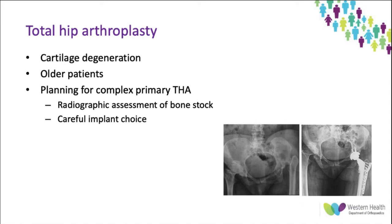In patients where significant cartilage degeneration is already present or in older patients, joint preservation is no longer indicated and total hip arthroplasty must be considered. Given the abnormalities of the acetabulum, planning is as for a complex primary total hip. Pre-operative radiographic assessment of superior bone stock is essential to ensure the acetabulum can support a prosthesis. A smaller acetabular component can reduce the need for bone graft but necessitates a smaller diameter head. If bone graft is needed, structural autograft from the femoral head or a shortening osteotomy can be used, and prosthesis options must be carefully considered — including undersized femoral stems, custom cups for smaller acetabular dimensions, and cup-cage constructs.